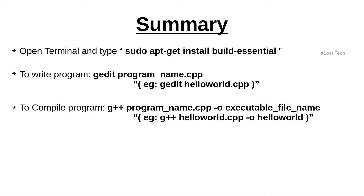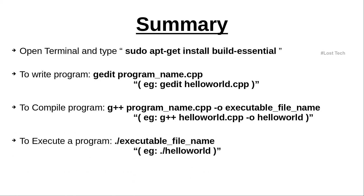To compile the program, type: g++ program_name.cpp -o executable_file_name — for example, g++ hello_world.cpp -o hello_world. To execute a program, type: ./executable_file_name — for example, ./hello_world. If you want to learn how to execute a C program in Linux, check the link above.